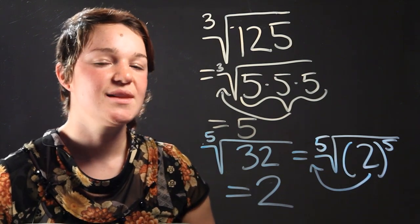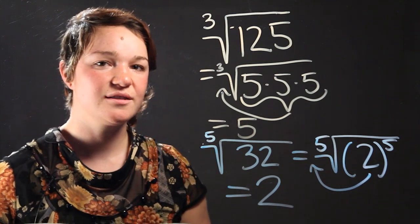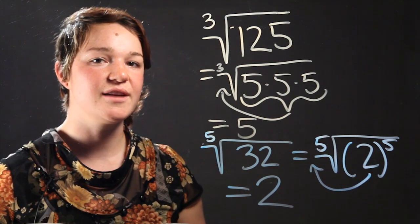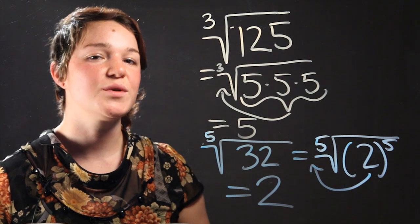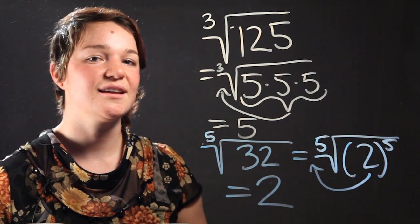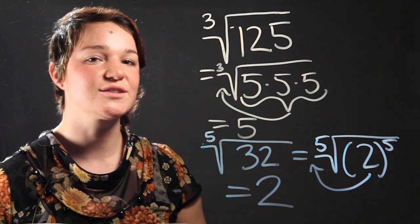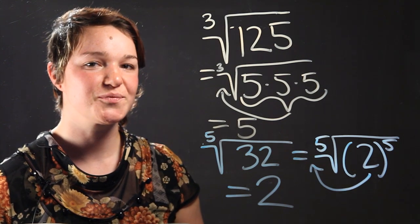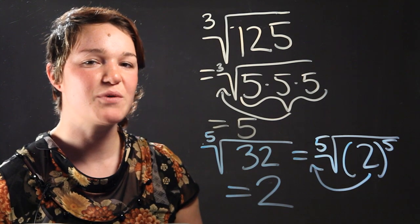So there you go. That's how you solve a number with an index in the radical that's greater than 2. Thanks for watching.